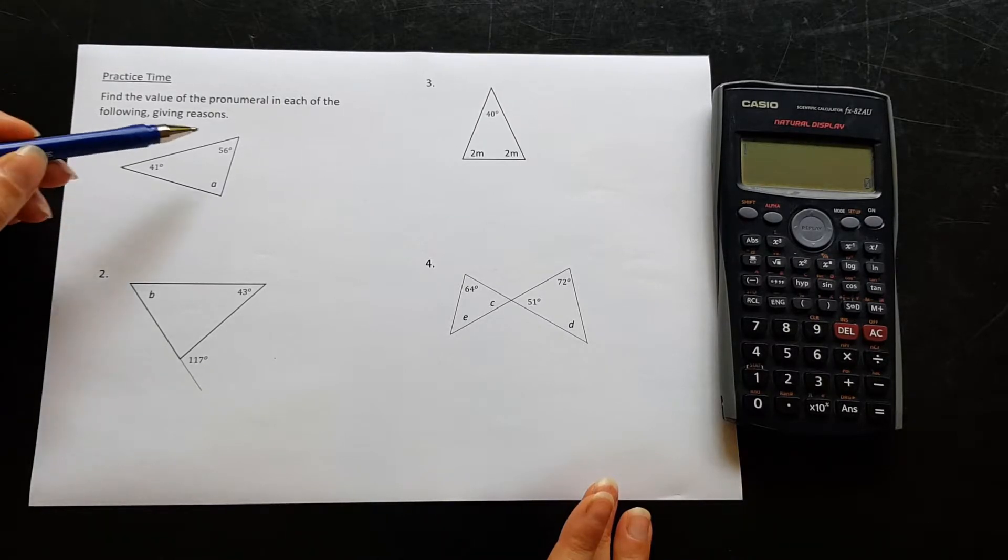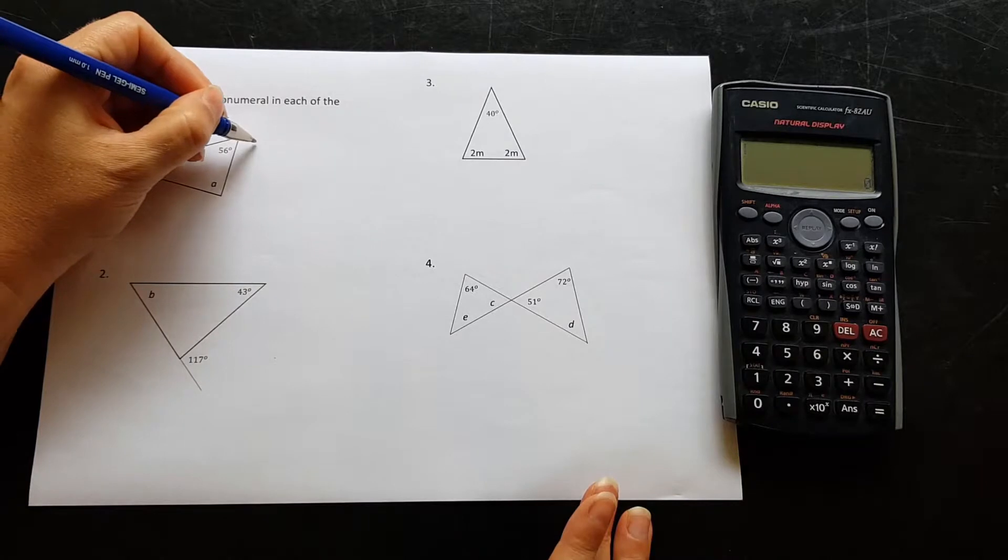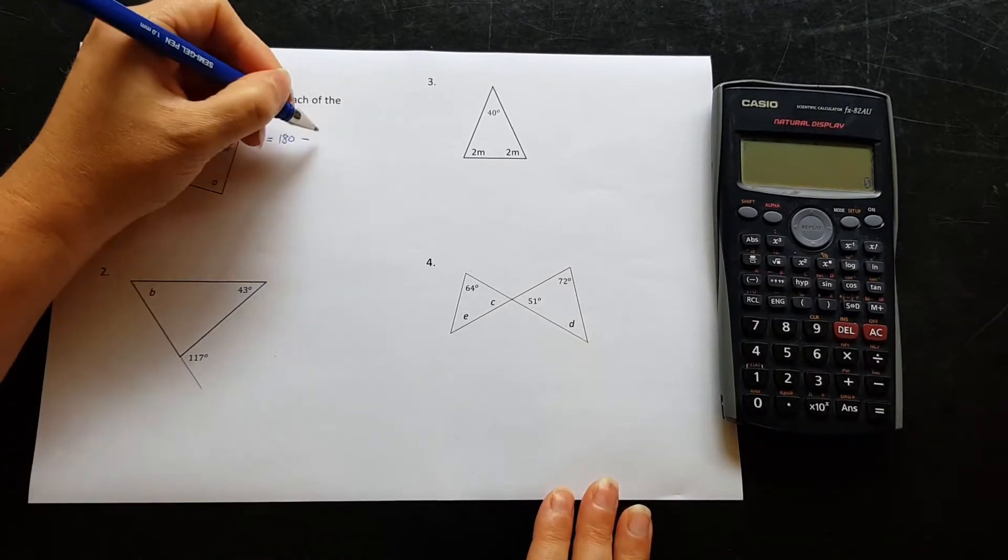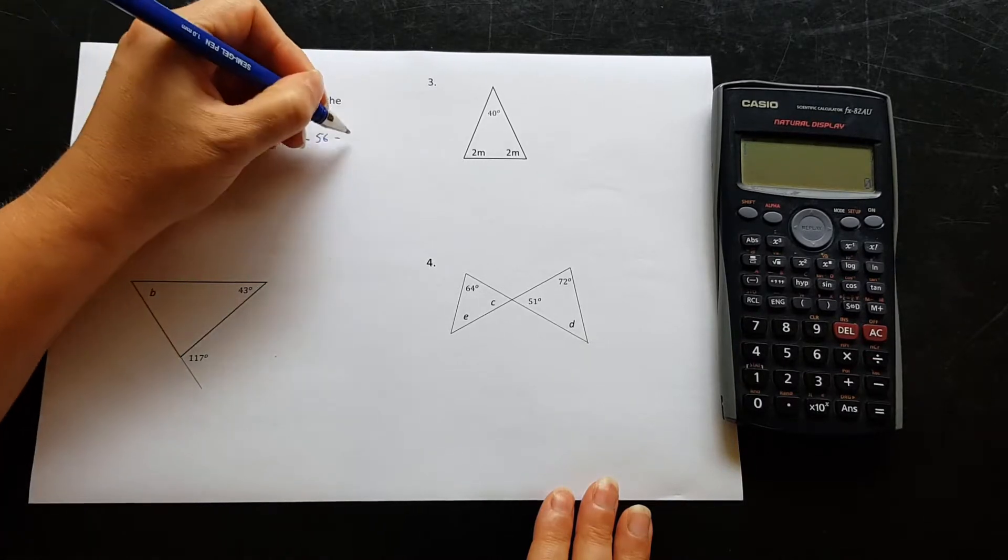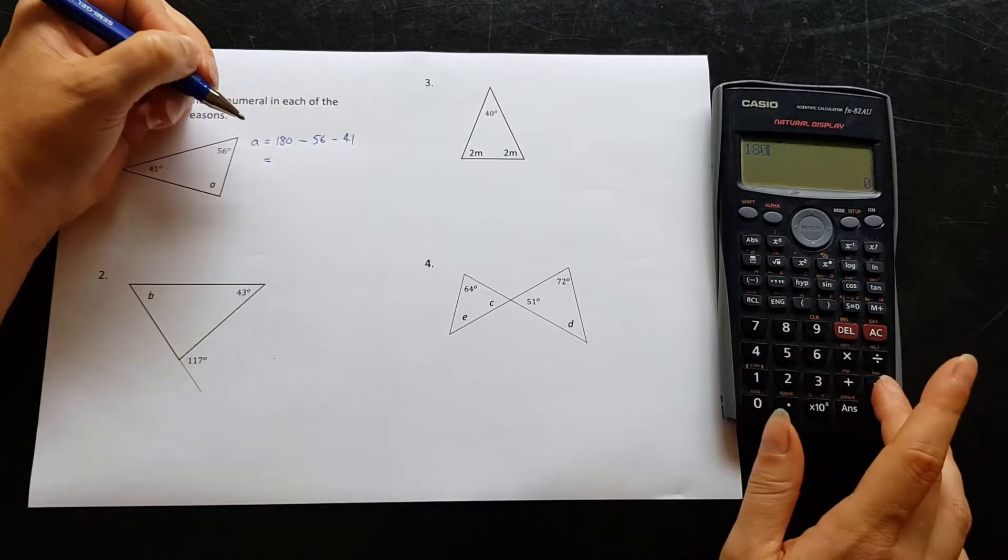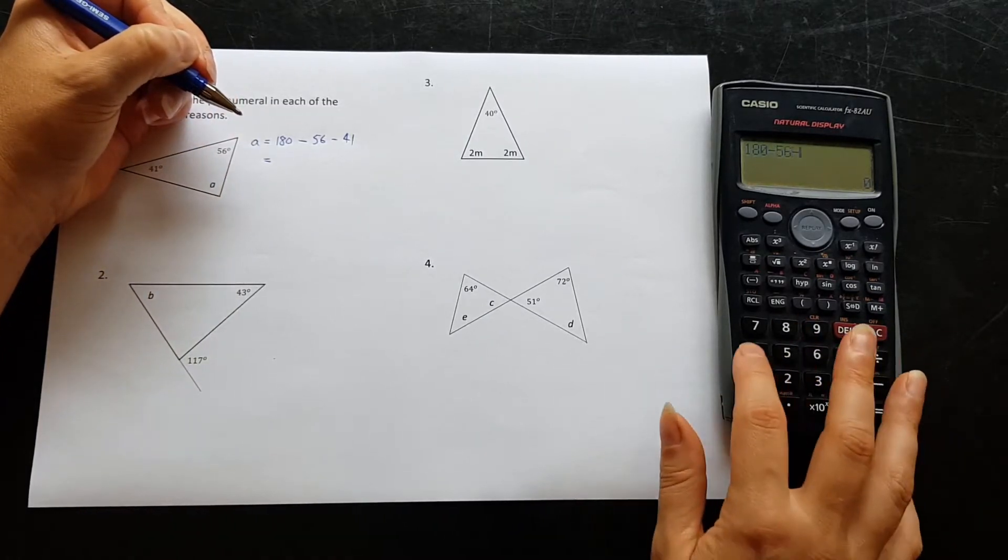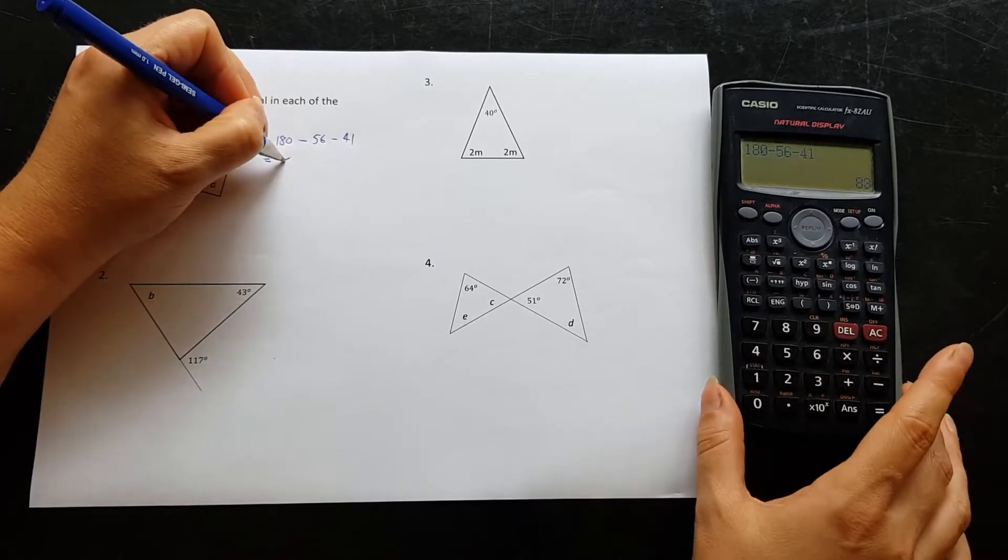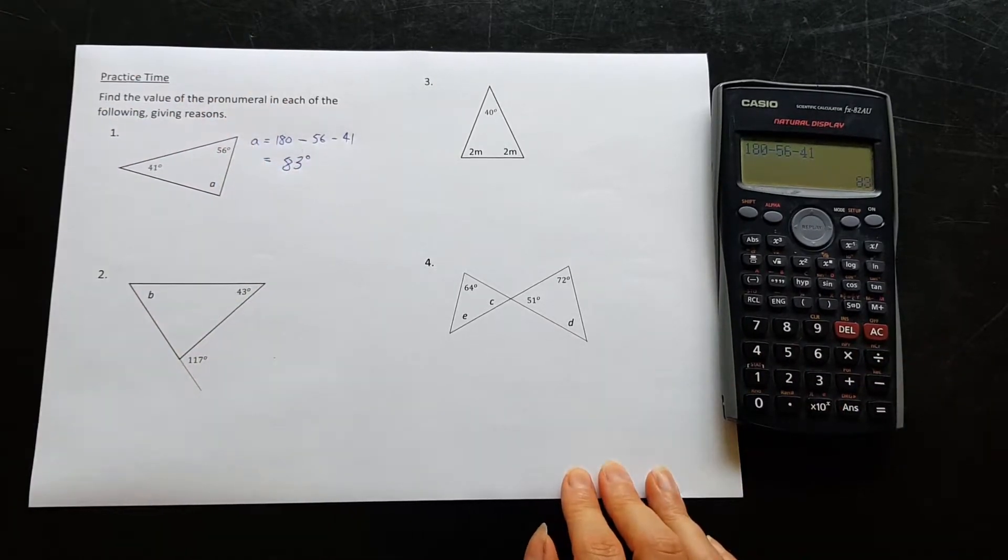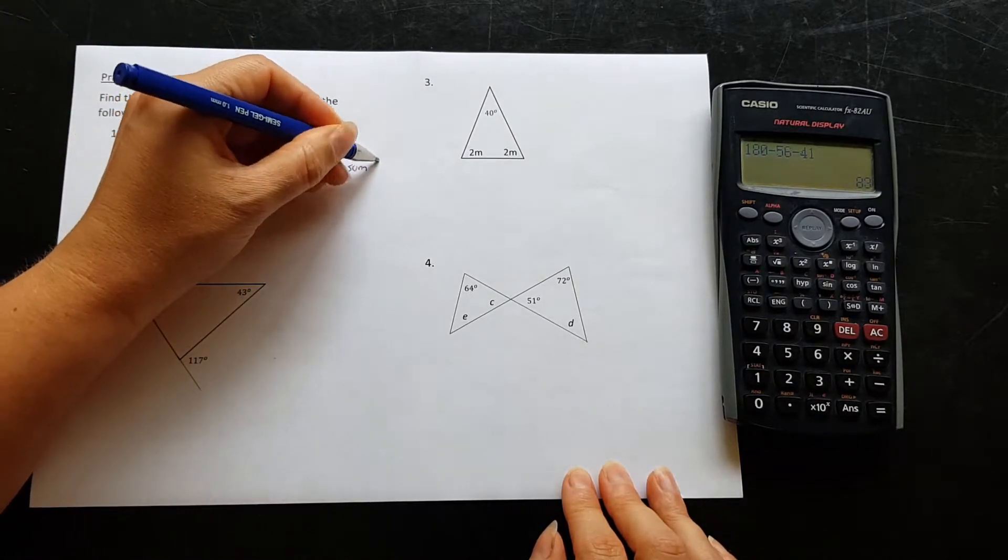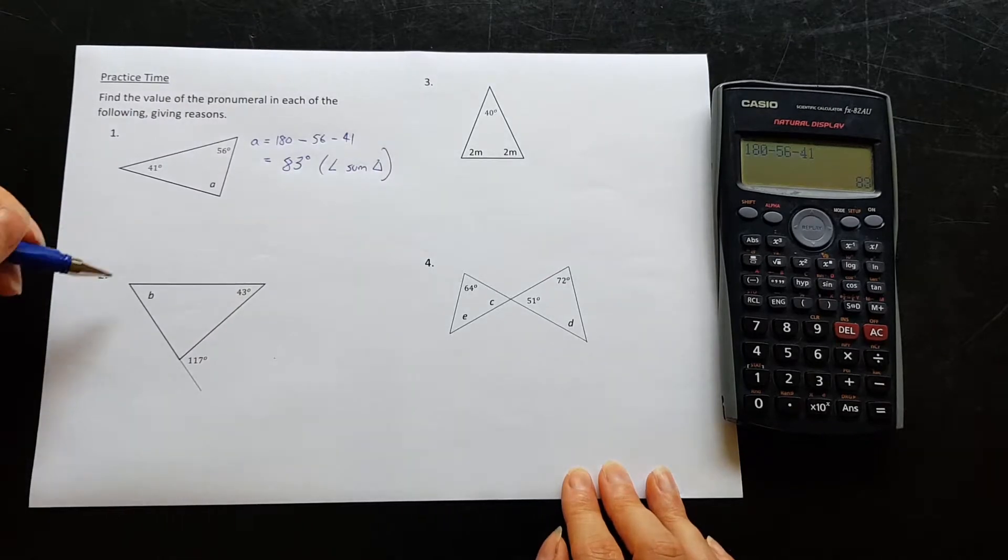So question number one, this is a straightforward angle sum of a triangle question. a is going to be equal to 180 minus these two angles, 56 and 41. 180 minus... and we get 83 degrees. And don't forget to write the rule: angle sum of a triangle.